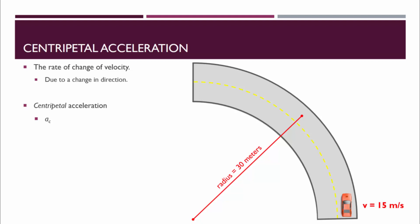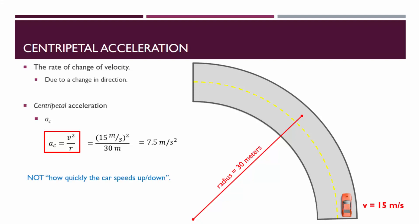Here's a new equation specifically for centripetal acceleration: AC equals v squared over r. We can substitute in the velocity of 15 meters per second and the radius of 30 meters, and we find that the centripetal acceleration is 7.5 meters per second squared. This is not telling us how quickly the car is speeding up or slowing down — the car isn't getting 7.5 meters per second faster each second.